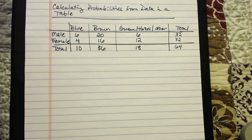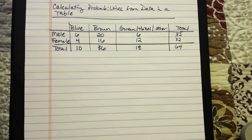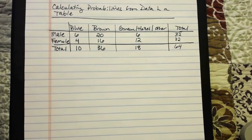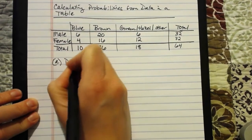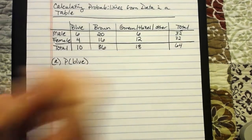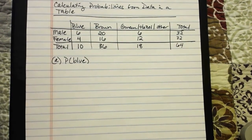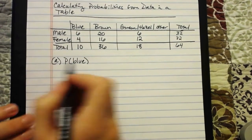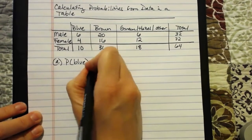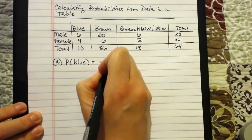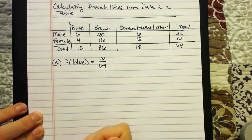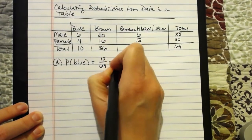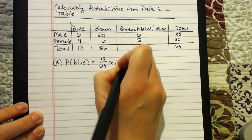Let's recap some of the probability stuff we've talked about so far. First, I wanted to calculate the probability of randomly selecting someone from this group with blue eyes. Out of the 64, how many individuals have blue eyes? 10. So that's 10 out of 64, or about 16%.